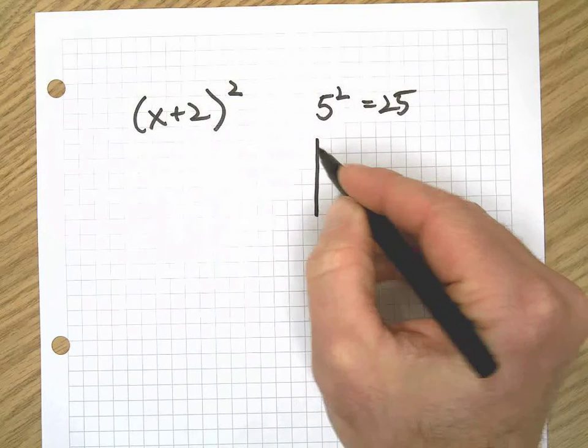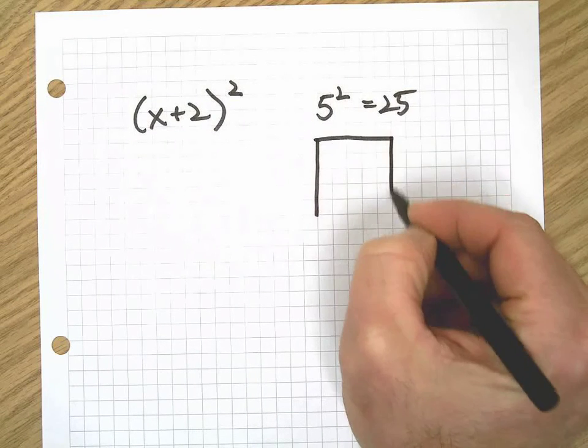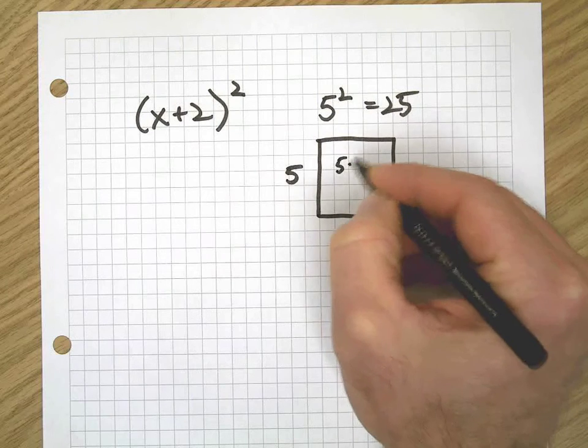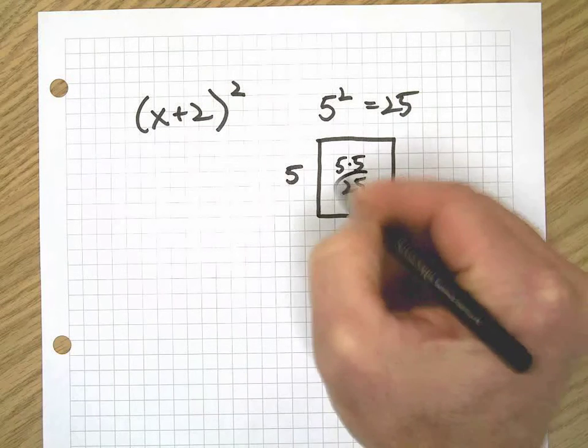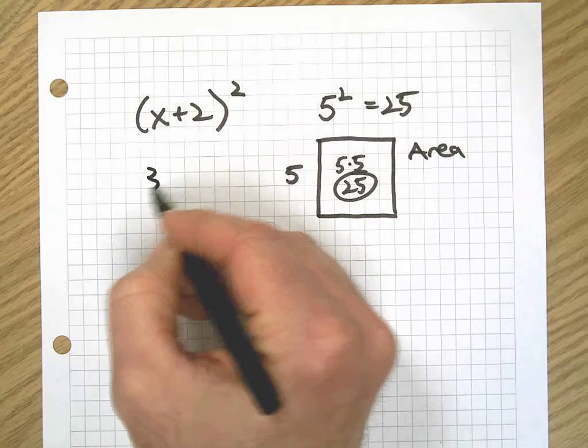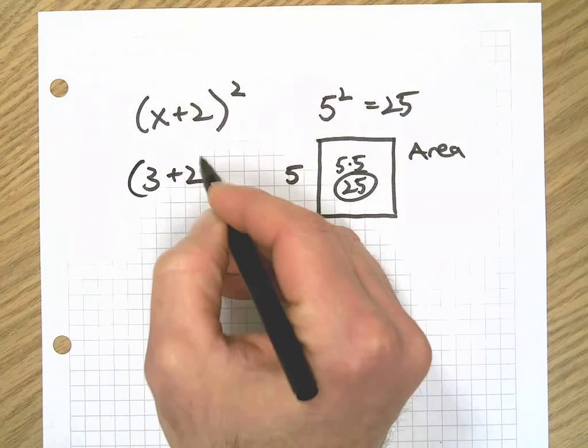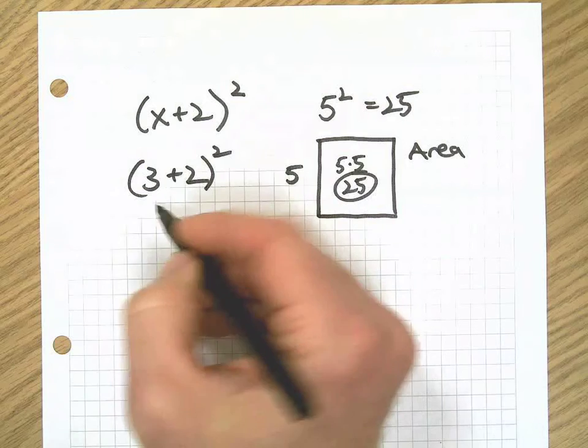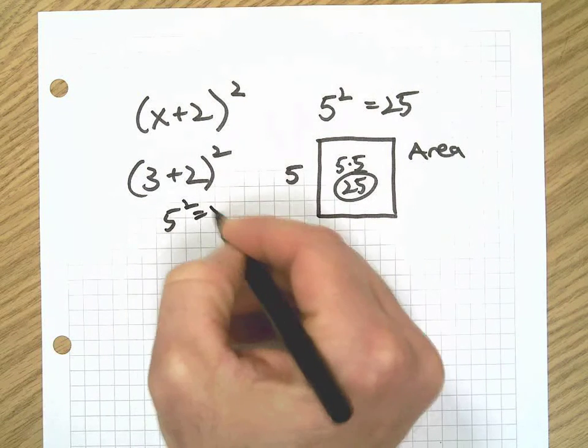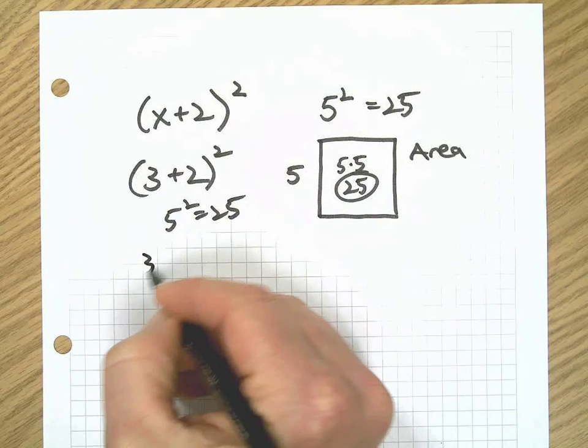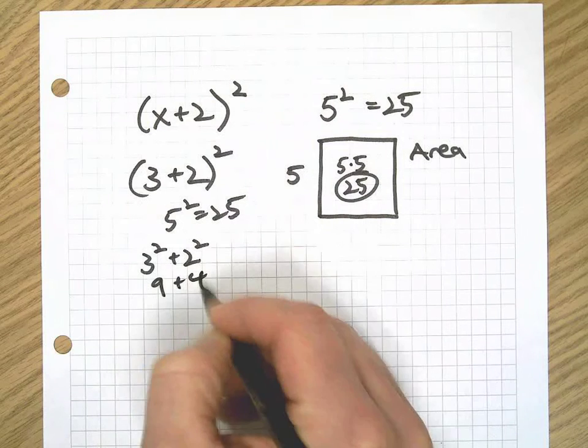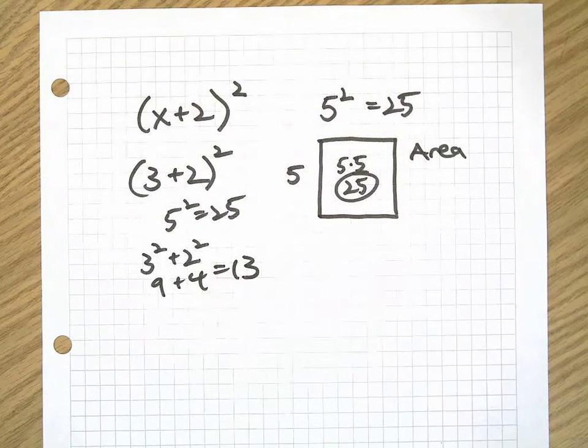Okay, now if I break that down and say, 'Hey, what's 3 plus 2 squared?' You add the 3 and the 2 and you get your 25. Some people do this: they think, 'Oh, that's 3 squared plus 2 squared,' that equals 9 plus 4 equals 13. Hey, that's a different answer!